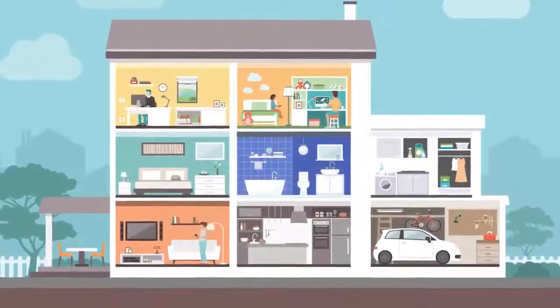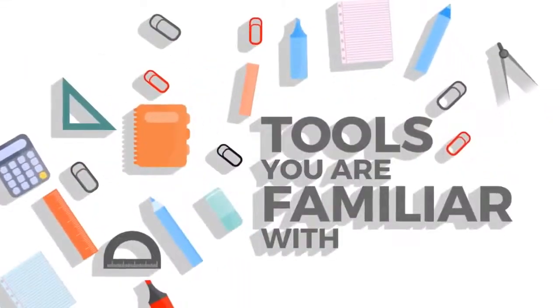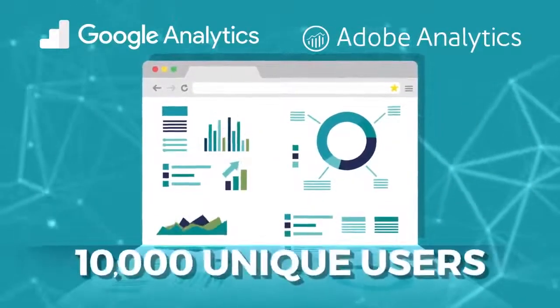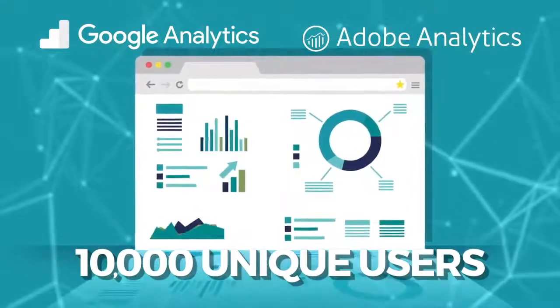How do you make sense of devices, people, and households? It can sound a bit confusing. Let's start with what tools you're familiar with. What does it mean when traditional analytics tools report 10,000 unique users on your site?